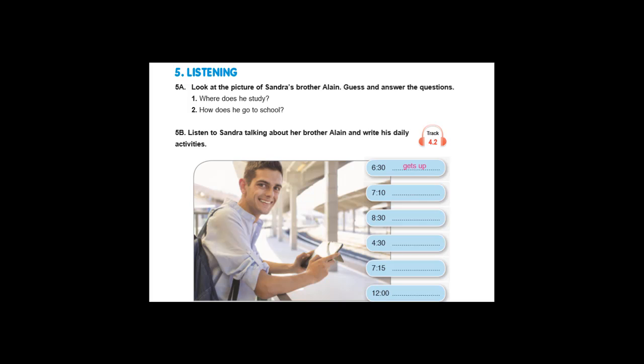Track 4.2, page 55, 5b — listen to Sandra talking about her brother Elaine and write his daily activities. My brother Elaine goes to Oxford University. He gets up at half past six. He catches the train at ten past seven. He has breakfast on the train. His classes start at half past eight and finish at half past four. After school, he goes to the library. He comes back home at quarter past seven in the evening and then we have dinner. After dinner, he goes to his bedroom and studies. He goes to bed around twelve o'clock. He wants to be a doctor because he loves helping people.